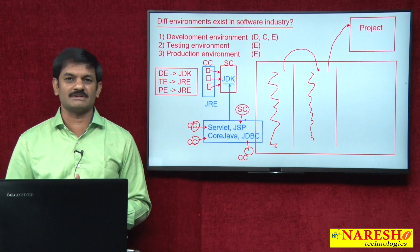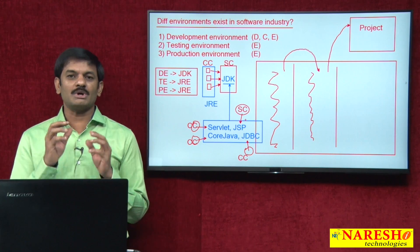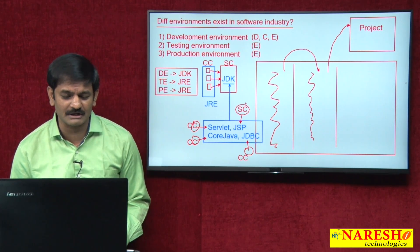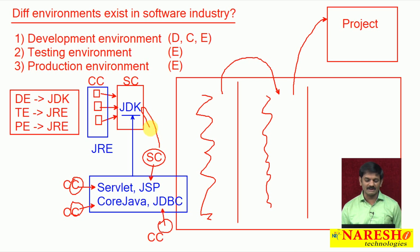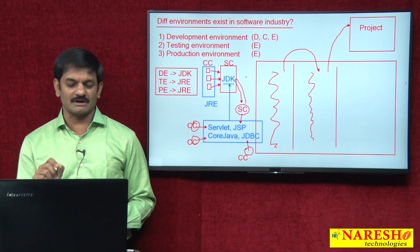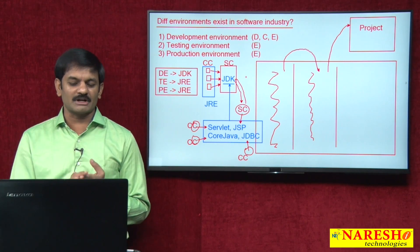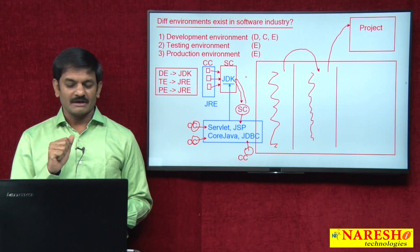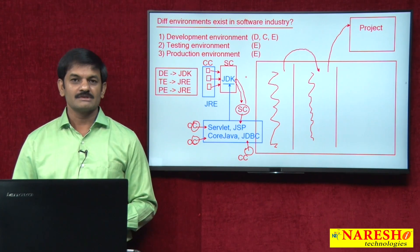Because JSP is placed in source file format on the server, it must be compiled there. To compile, you need a compiler. The compiler is available with JDK, not JRE. So in the server computer — in the development environment, testing environment, and production environment — you must install JDK. If you install only JRE on the server, JSP files cannot be compiled and the project execution will fail.